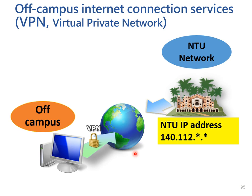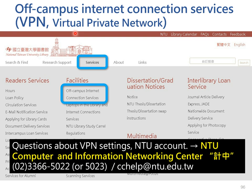Before searching, there's a notification for you. Most NTU library e-resources can be accessed on the campus network. However, if you are not in the NTU campus, you can still access databases, e-journals, and e-books remotely through the off-campus internet connection service — also known as Virtual Private Network, or VPN. By using VPN, you can access e-resources outside the campus. You need to do some settings for the first time. There's an instruction page linked in the services category on the library website. This service is provided by NTU Computer and Information Networking Center. If you have trouble setting up VPN, you can ask them for help.